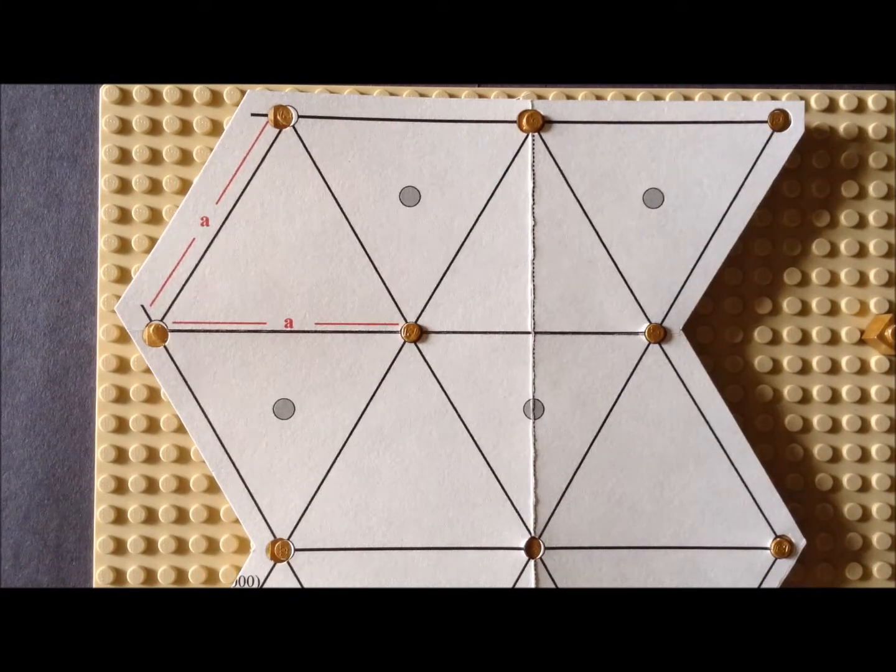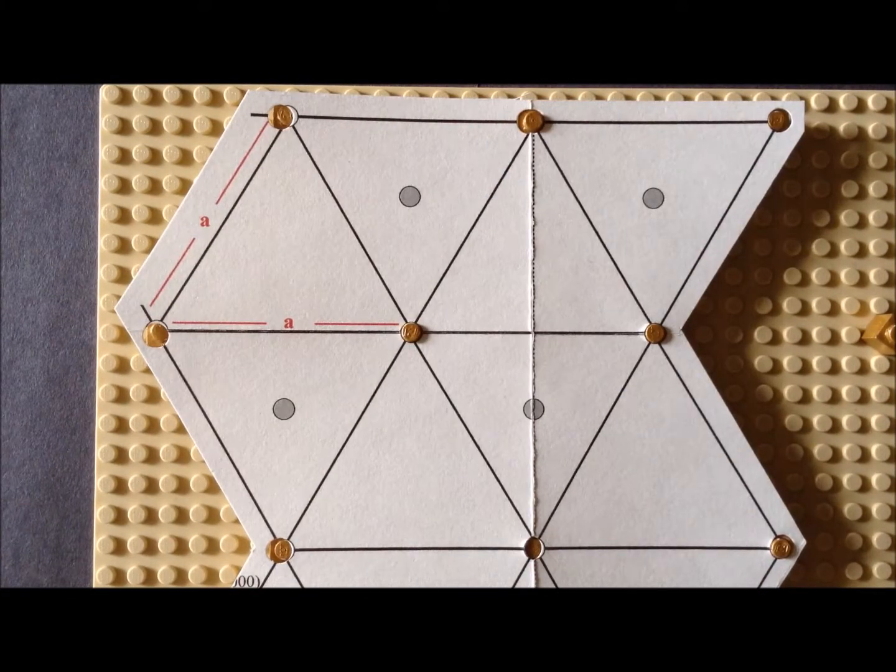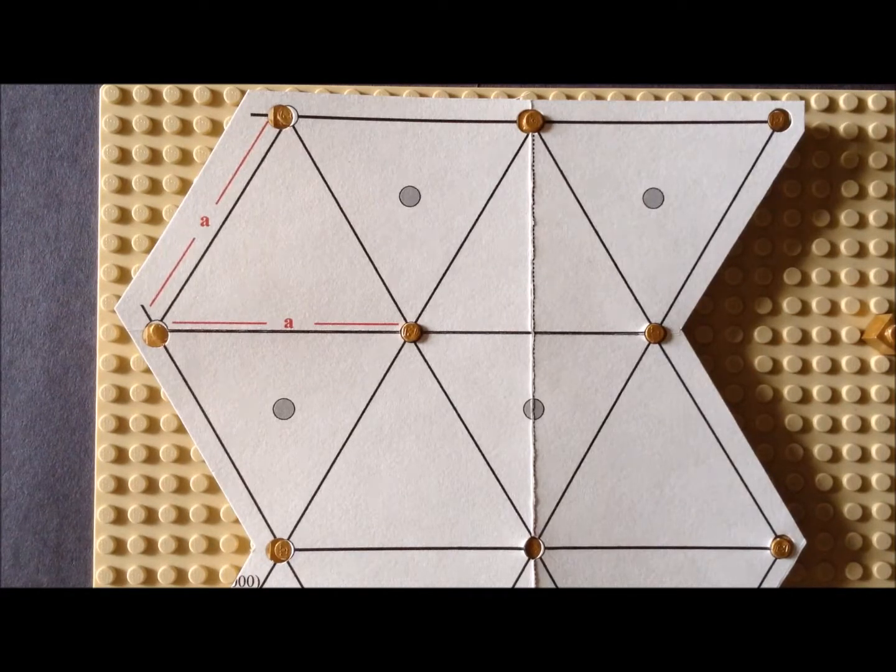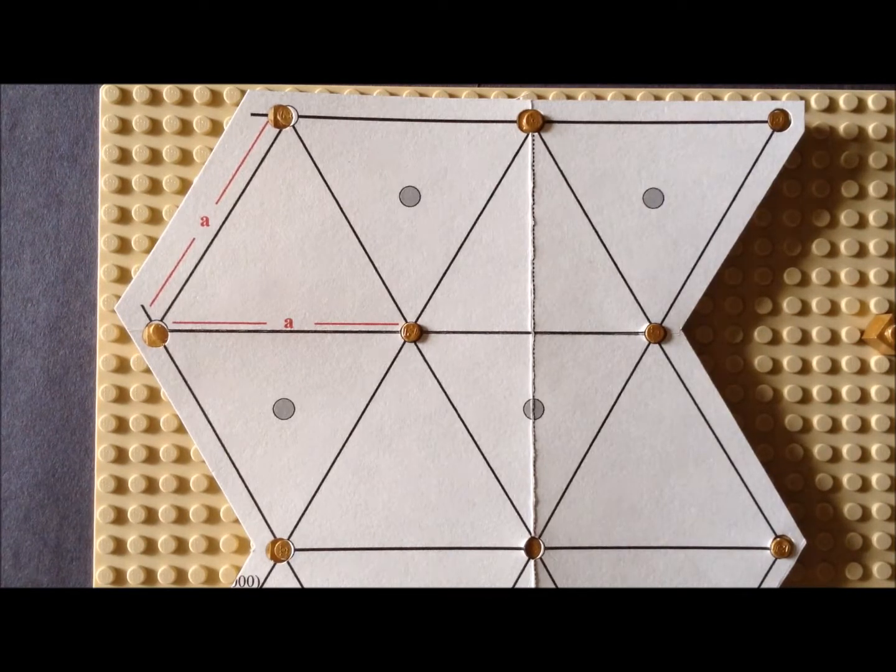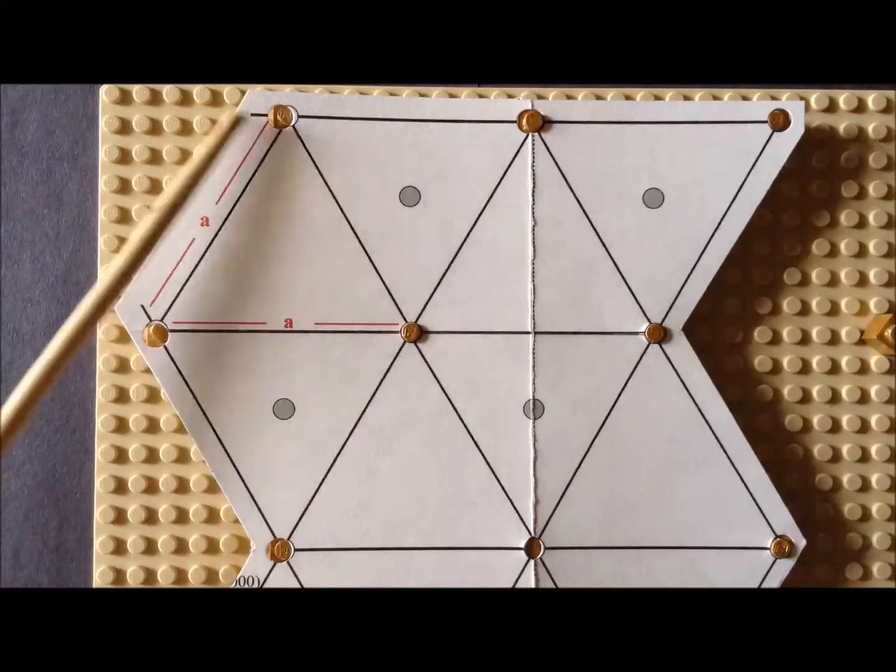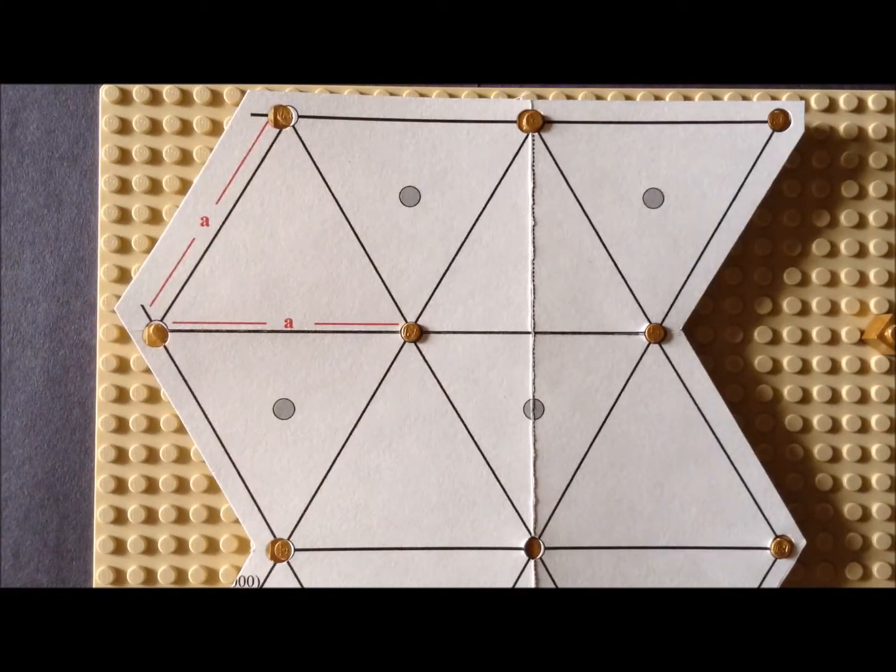Now, for contrast, we have the HCP (0001) structure, which at the surface seems identical to the hexagonal primitive case.